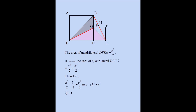If we multiply both sides of this equation by 2, we get the result we are trying to establish: a² + b² = c², and that proves the Pythagorean theorem.